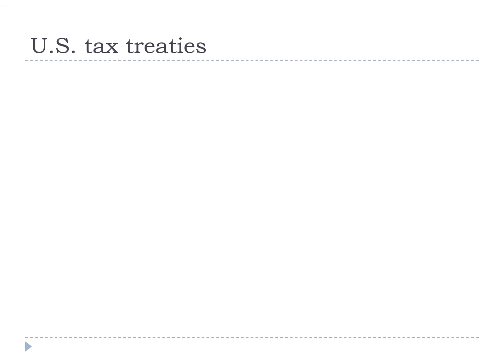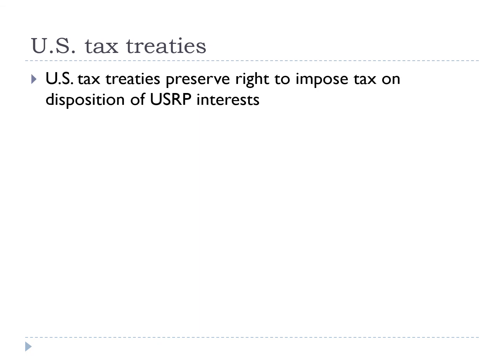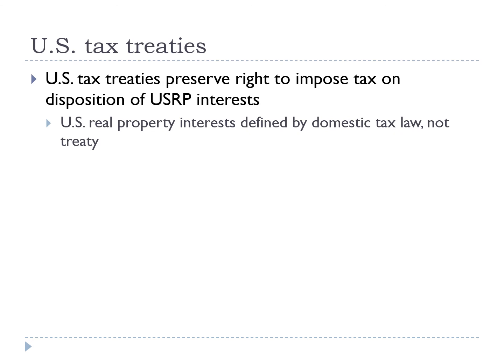U.S. tax treaties provide rules that are generally consistent with the U.S. tax rules for U.S. real property interests. U.S. tax treaties generally preserve the right of the United States to impose tax on dispositions of U.S. real property interests. The model treaty permits the United States to tax a foreign resident's gain from both real property and U.S. real property interests. Note that the U.S. model treaty does not define the term 'U.S. real property interest.' However, under Article 3 of the treaty, whenever a term is not defined in the treaty, the term has the meaning given by domestic tax law.